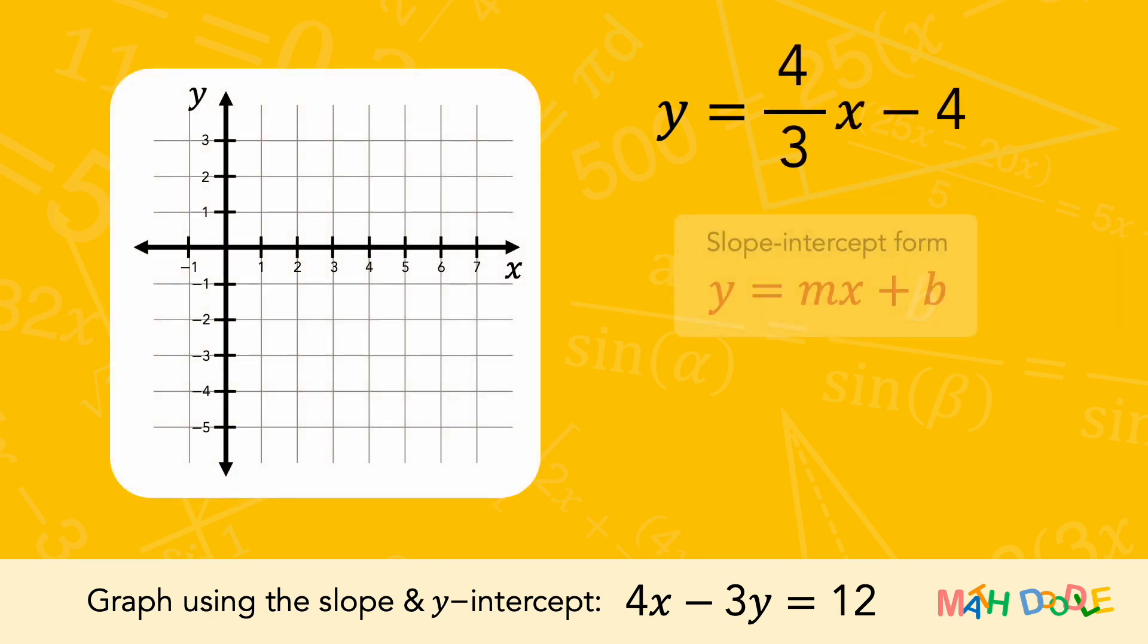Now, let's compare the equation with the slope-intercept form. In the slope-intercept form, m in front of x represents the slope, and b represents the y-intercept.